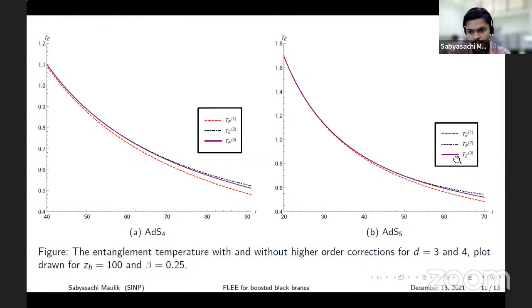If we consider the bare entanglement temperature given by the red line, it is simply inversely proportional to L. But at the next higher order the corrections are positive so it increases by some amount, and at third order the corrections are negative so it decreases again.